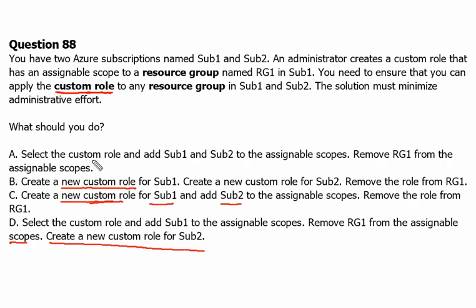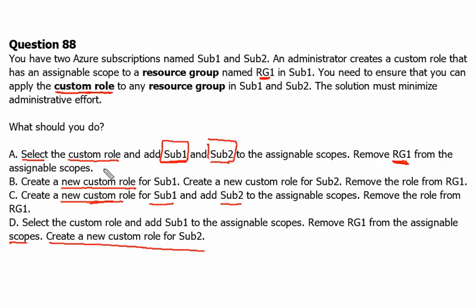Option A is the correct answer. We select the existing custom role and add subscription 1 and subscription 2 to its assignable scope. If we apply on subscription 1, it will be applicable to all resource groups in subscription 1. If we apply to subscription 2, it will be applicable to all resource groups in subscription 2. We then remove resource group 1 from the assignable scope since subscription 1 will already cover it. Therefore, creating a new custom role is not needed, making B, C, and the 'create new custom role' part of D incorrect.